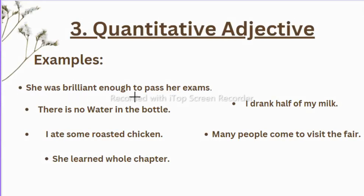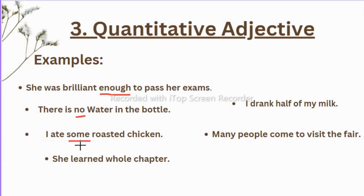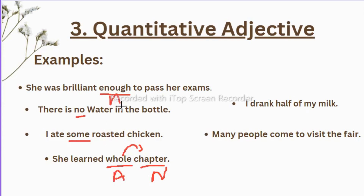She was brilliant enough to pass her exam — 'enough' shows the quantity of how brilliant she is. There is no water in the bottle — 'no' also shows quantity, nothing is in the bottle. I ate some roasted chicken — 'some' shows the quantity. She learned the whole chapter — 'whole' shows the quantity of the chapter done. These underlined words are all adjectives.